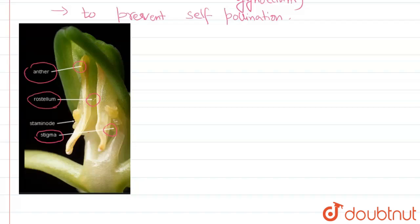So what does it do? As I have said, it separates the male part from the female part of the flower, usually to prevent self-pollination. So I hope you understand the question as well as the answer. Thank you.